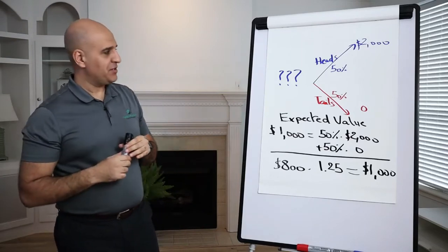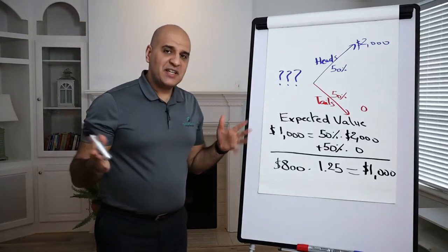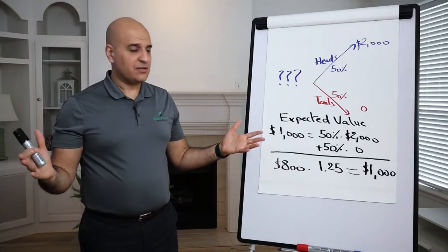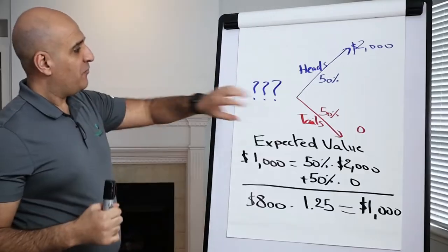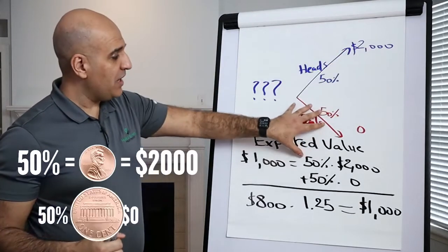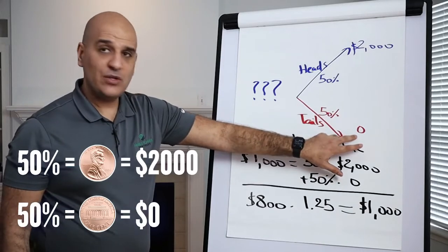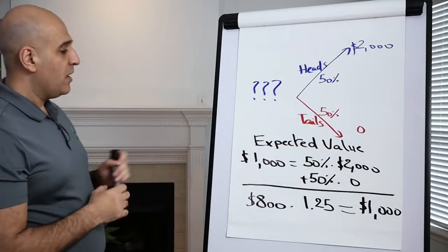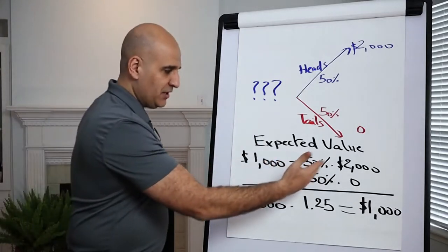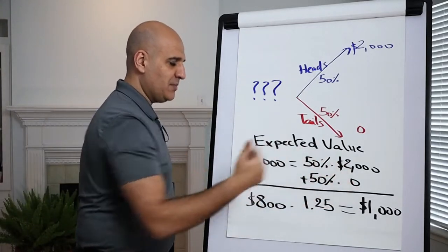Now let's do some analysis. If you were to play this game a million times, on average, you will make $1,000. Why is that? 50% of the time, you are going to get $2,000. And the other 50% of the time, you are going to get zero. The expected value, that's what we call this, is $1,000. And the math is 50% times $2,000 plus 50% times zero.